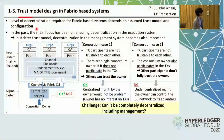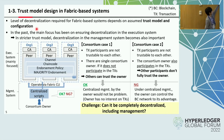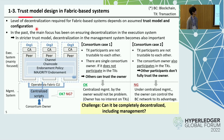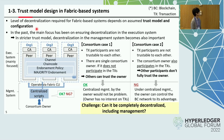The level of decentralization required for fabric-based systems depends on the assumed trust model and configuration. In the past, the main focus has been on ensuring decentralization in the execution system. But in a stricter trust model, decentralization in the management system becomes also important.